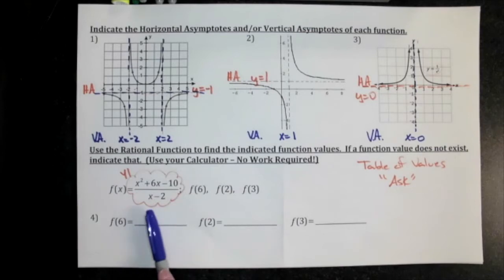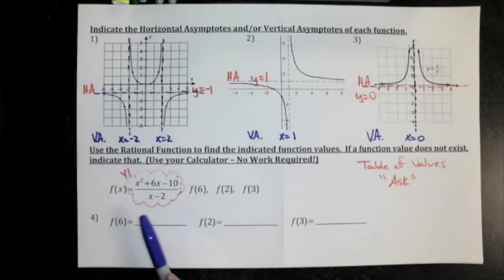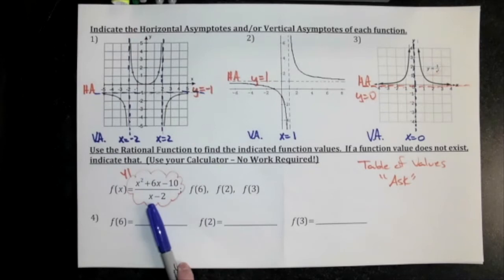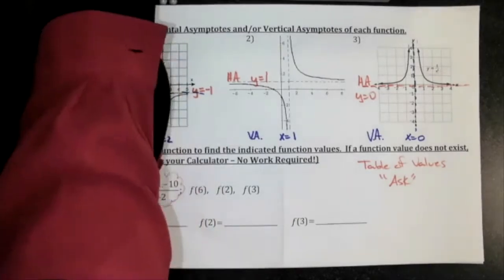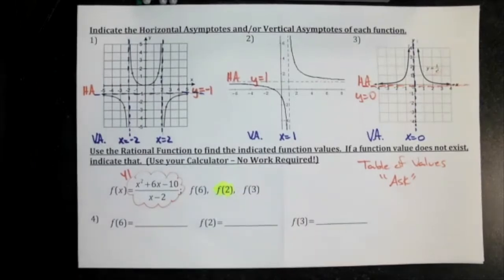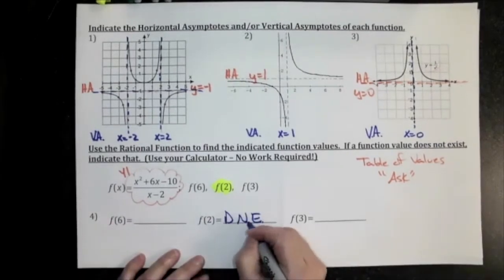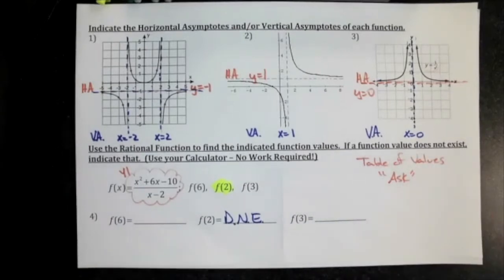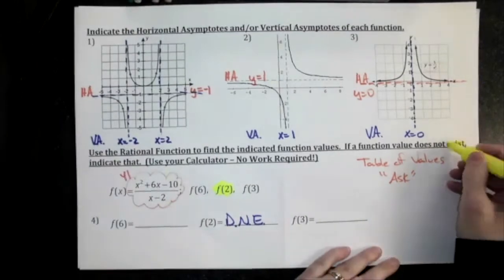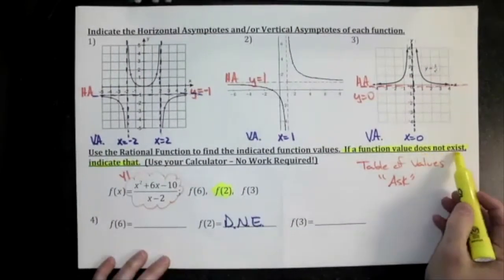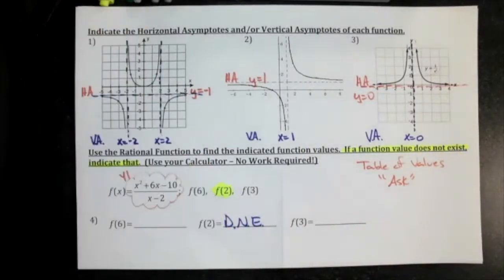If you're doing this by hand, look at the denominator — it's x minus 2. When I plug in 2 on the bottom, I get 2 minus 2, which is 0, and I can't divide by zero. So that one is an obvious case where the value does not exist, whether you're using a calculator or not. The directions tell you to write 'does not exist,' so if you're paying attention to the directions on the test, you'll know exactly what to write.